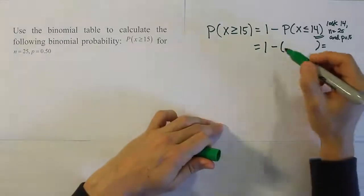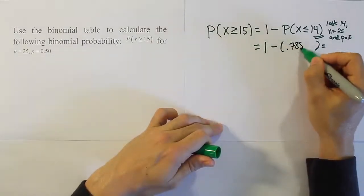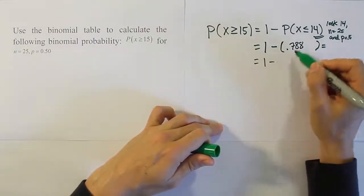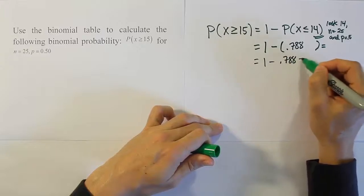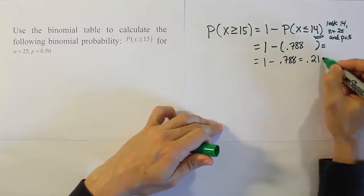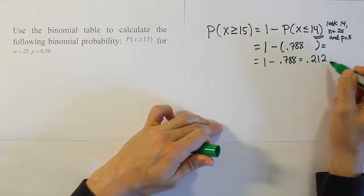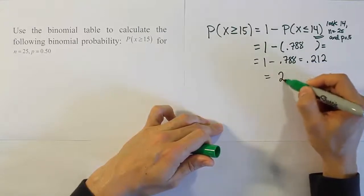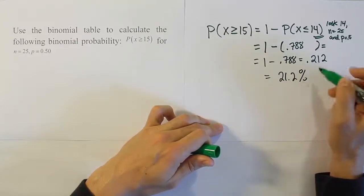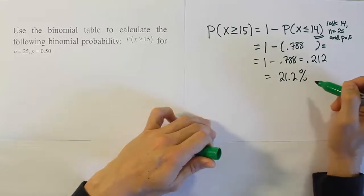We found the answer 0.788, and we just have to do 1 minus 0.788 to get 0.212, which is the same as 21.2%. That's it.